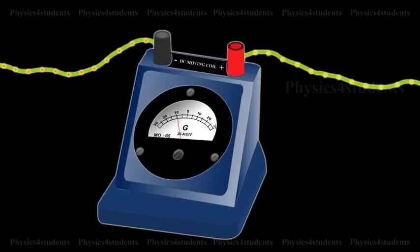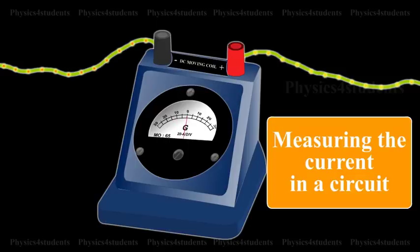Moving Coil Galvanometer. Moving Coil Galvanometer is a device used for measuring the current in a circuit.